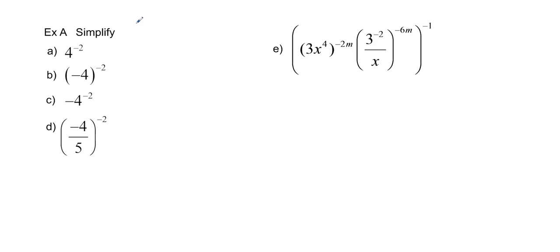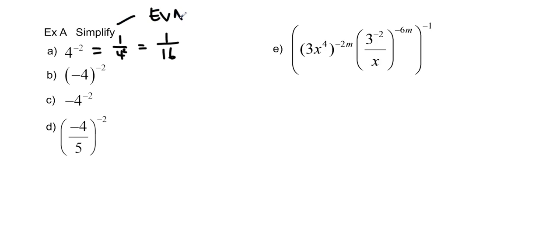We're going to use those rules to find the answers for these examples. 4 to the negative 2: that's 1 over 4 squared, which is 1 over 16. If it says simplify, we only need to get rid of the negative exponent, so we'd write 1 over 4 squared. If it says evaluate, then we find the number: 1 over 16.